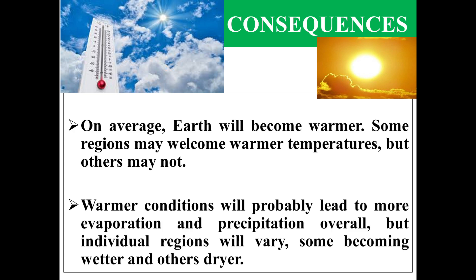Consequences: on average, Earth will become warmer. Some regions may welcome warmer temperatures but others may not. Warmer conditions will probably lead to more evaporation and precipitation overall, but individual regions will vary, some becoming wetter and others drier.